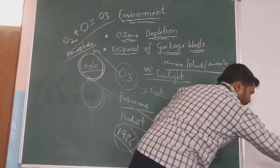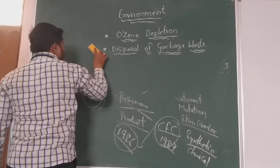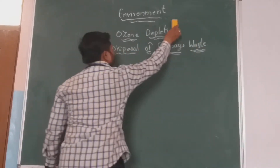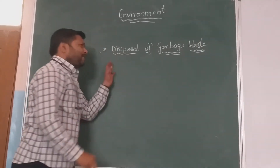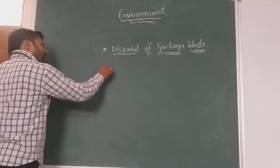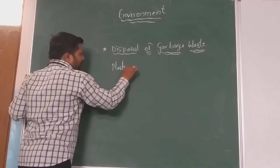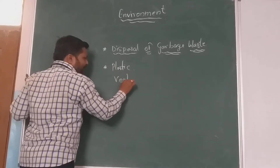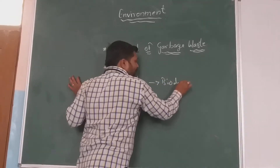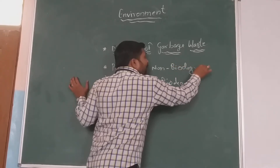Now let's come to another aspect, that is regarding garbage waste. We know that in our city there is a large amount of waste going to come. We can take a classroom as an example — from the class also we can have a large amount of waste produced. This has to be systematically disposed. We never separate plastic waste and vegetable waste, but actually we have to separate them, because one is biodegradable waste and another is non-biodegradable waste. So they have to be separately disposed.